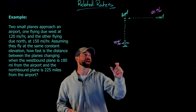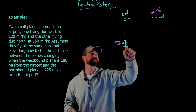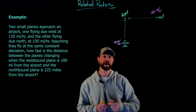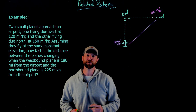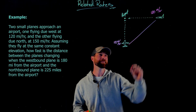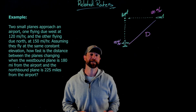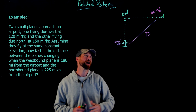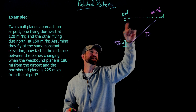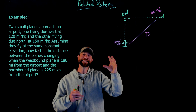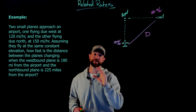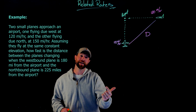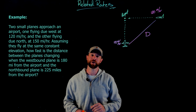In this case, I'm being asked about the distance between these two planes, so I'm going to give that distance a value — I'm going to use a capital D. I can relate the distances these planes are from the airport and think of this as a right triangle, which will be very useful, because then I can use the Pythagorean theorem or right triangle trigonometry to solve the problem.